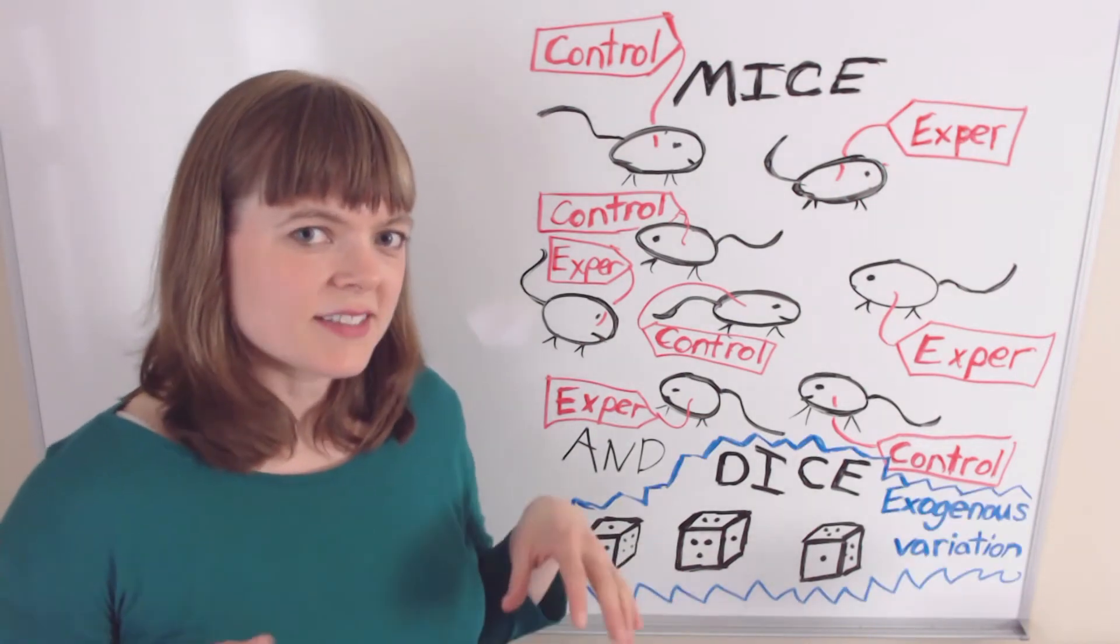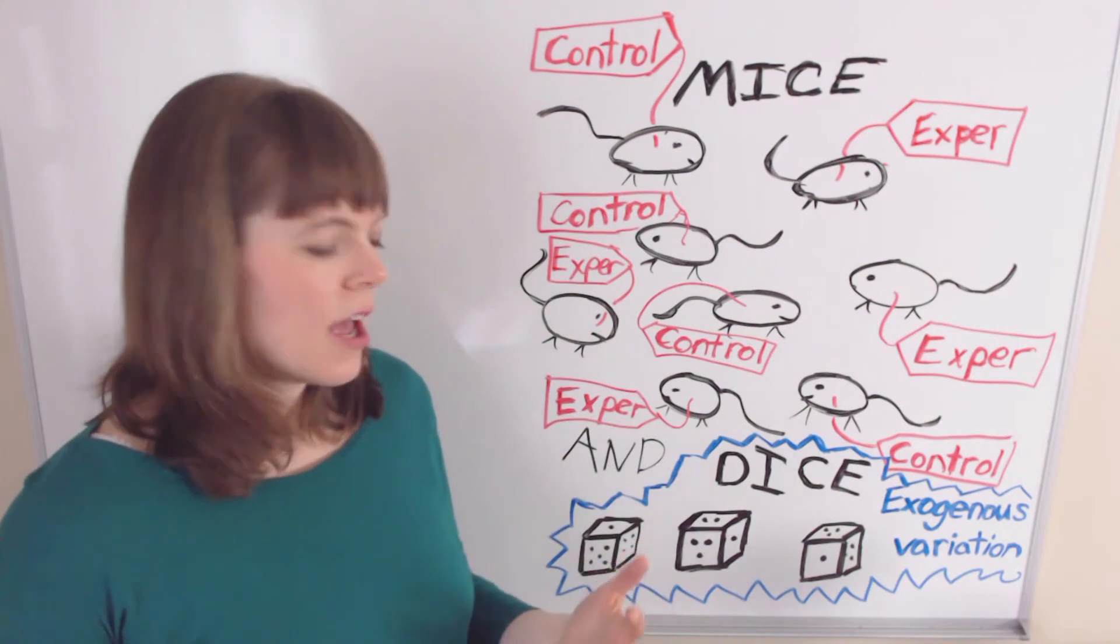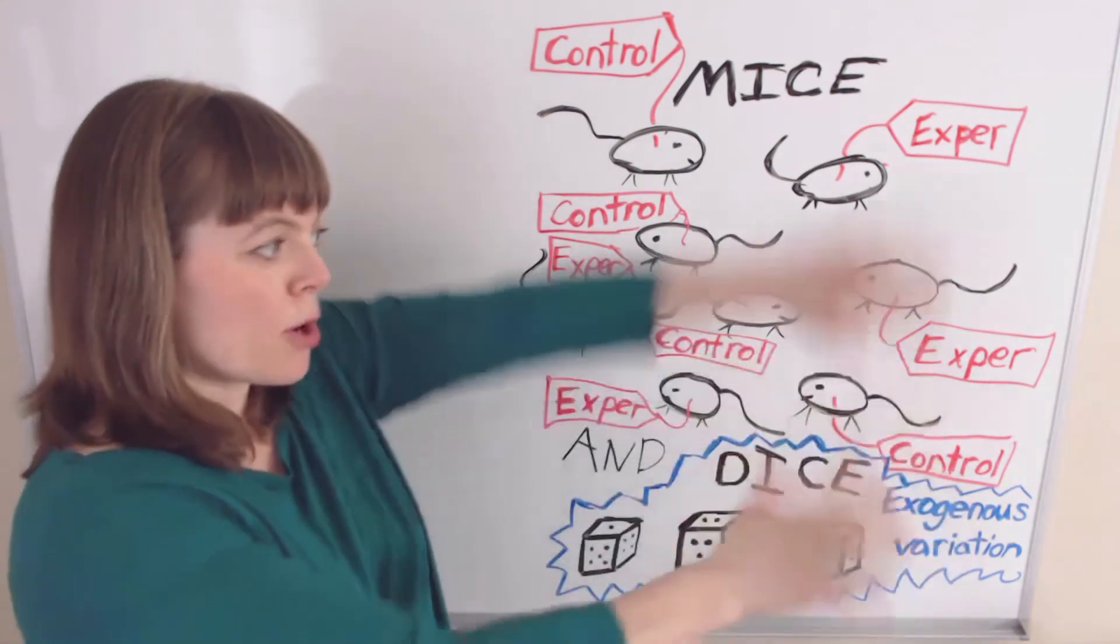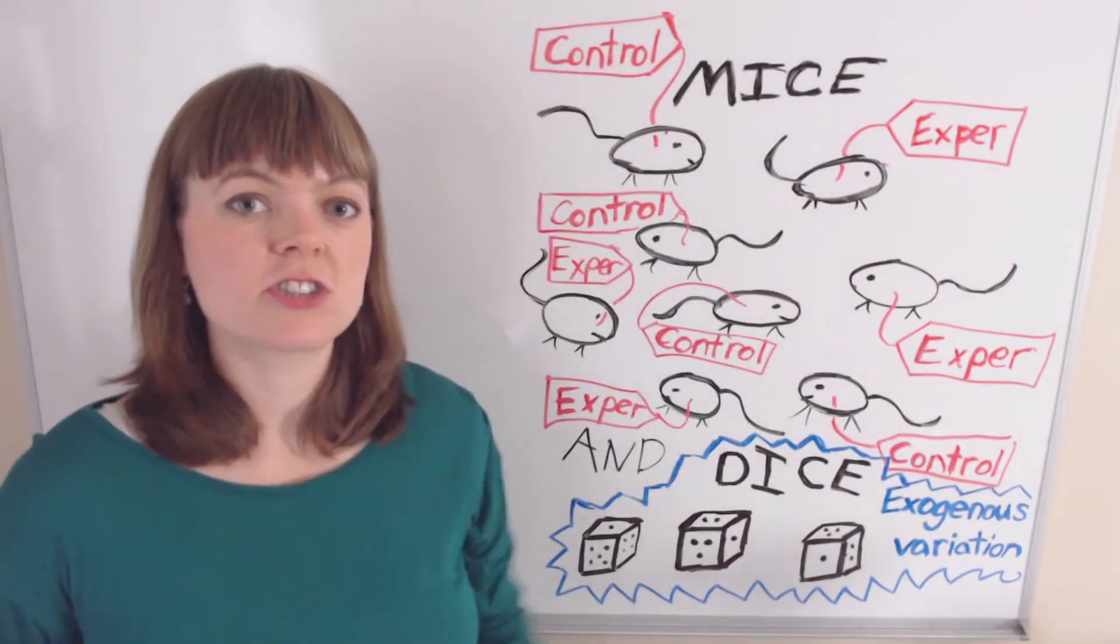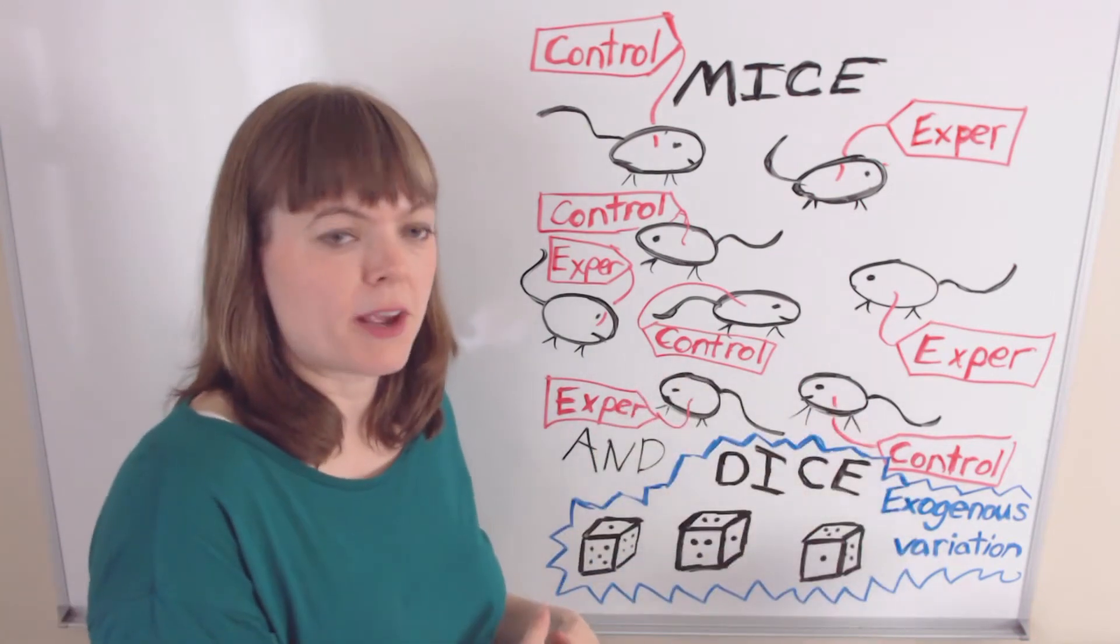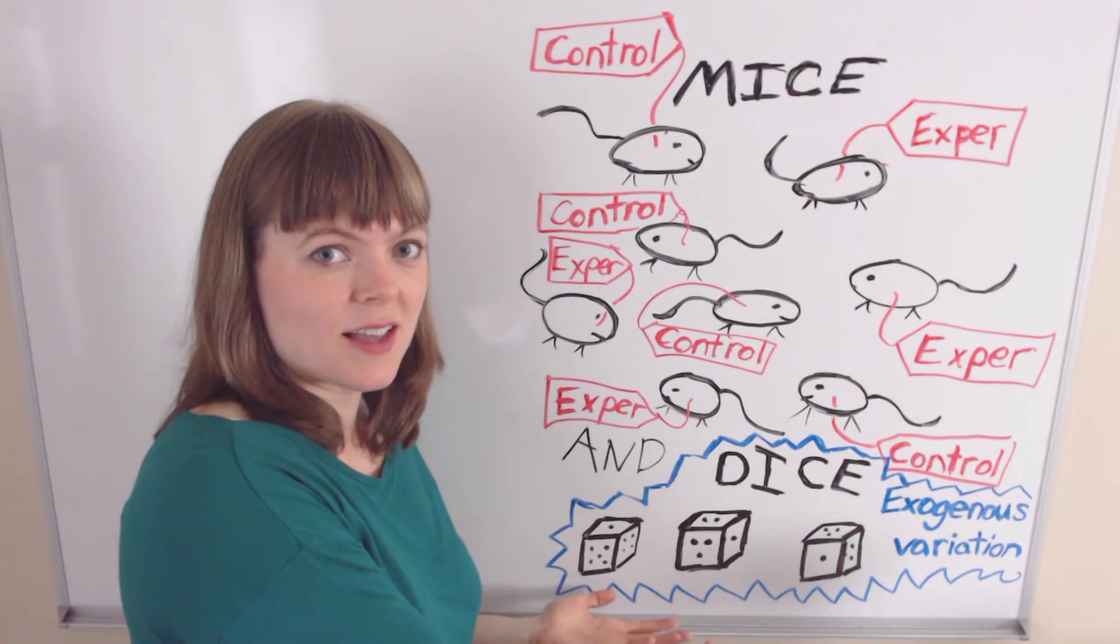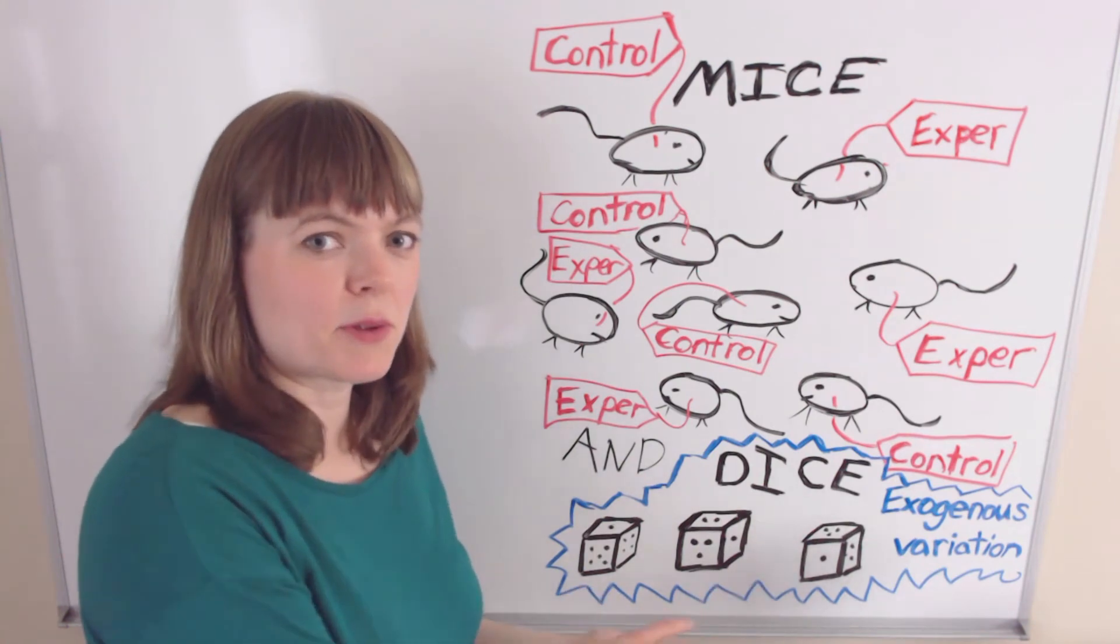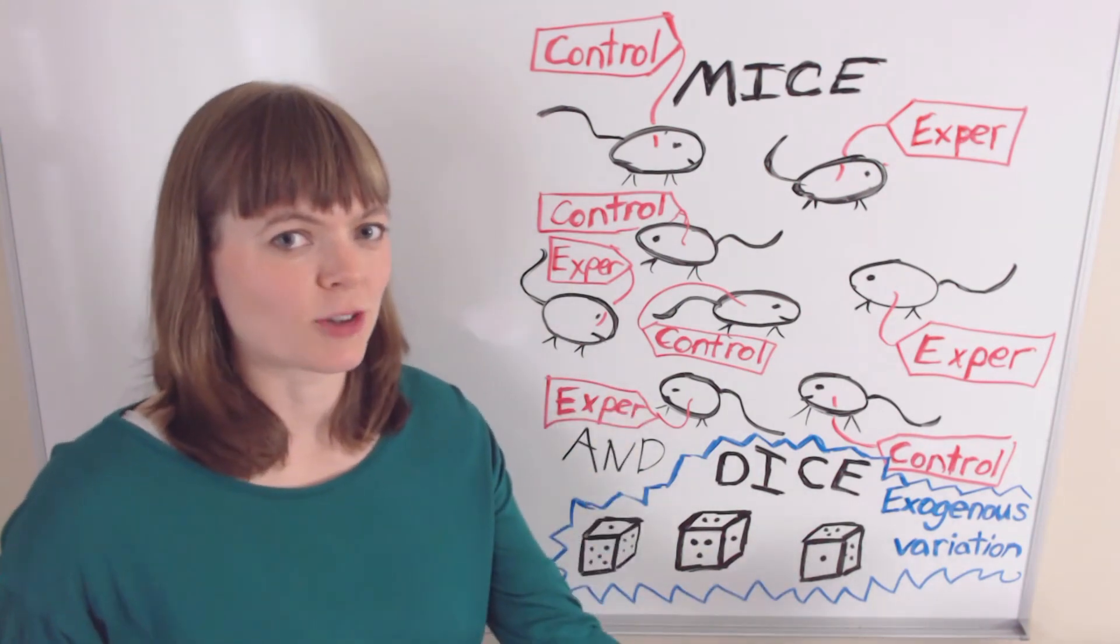Exogenous variation has a history and a background apart from this, but for the purpose of talking about identification strategies, what really matters is exogenous variation is going to be our source of randomness that'll help us assign people to a control and an experimental group.